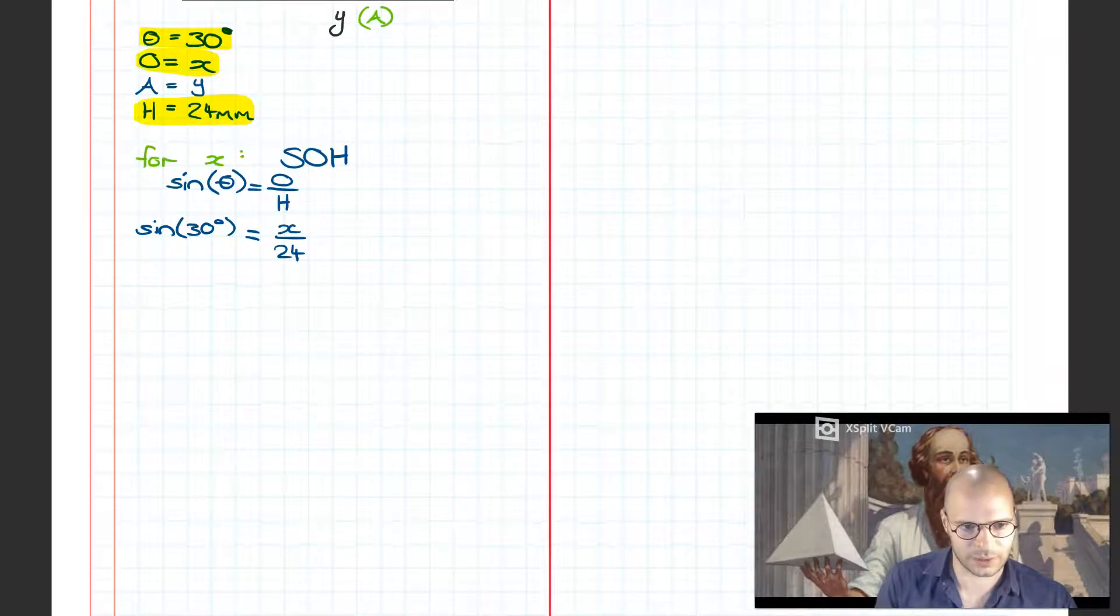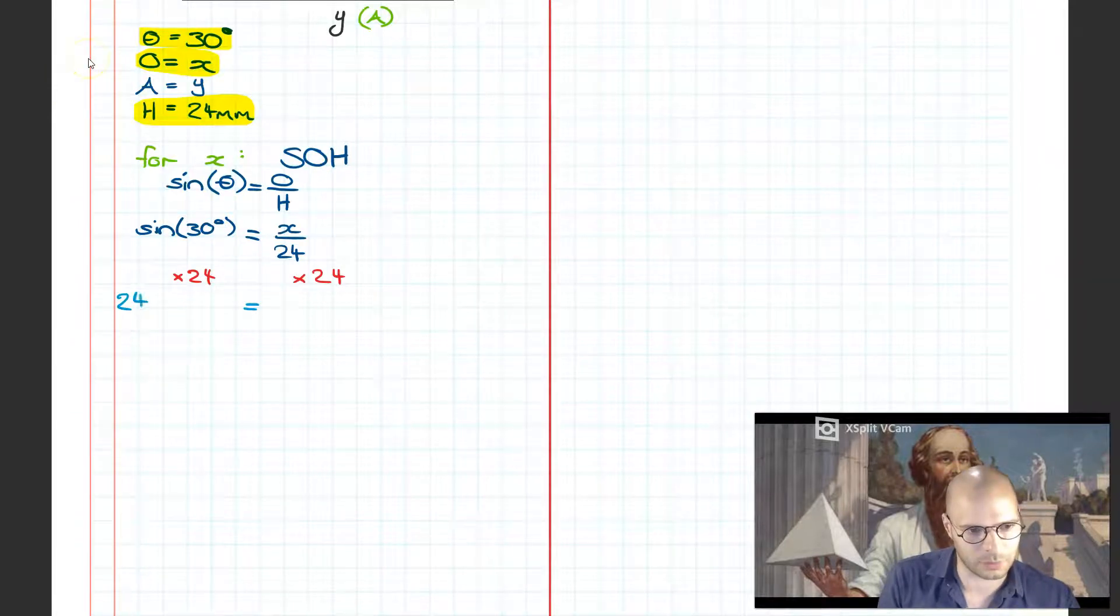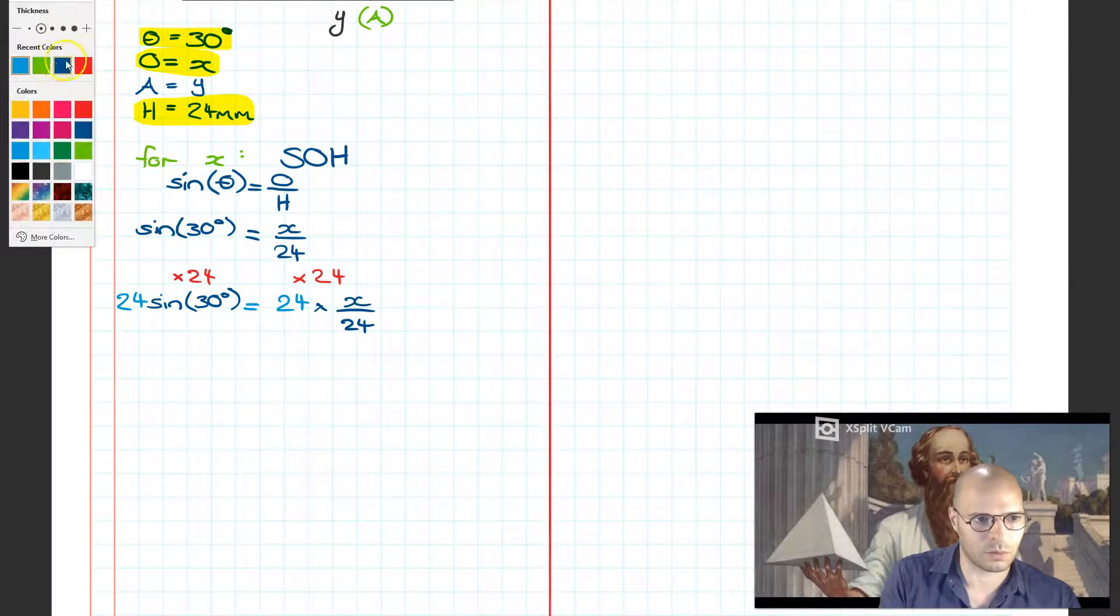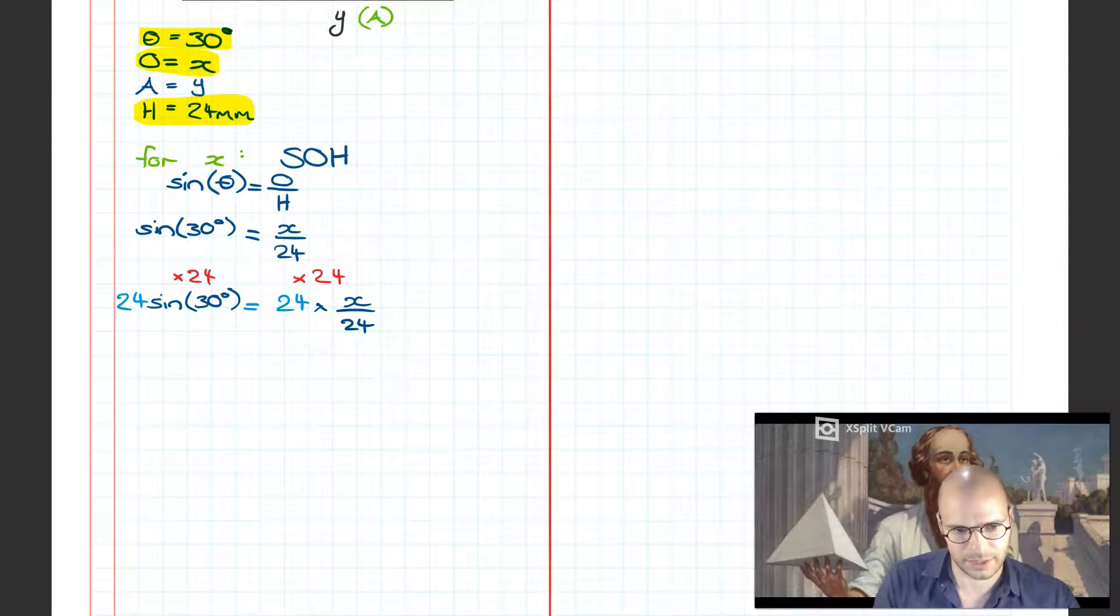Subbing in the values, I have sine 30 degrees is equal to X over 24. Now the way in which we solve for X is we need to rearrange this equation. Next to X we have a divide by 24, so to reverse divide I'm going to times. Multiplying this out, 24 appear on the left and we write this like algebra. The 24 and the sine just sit together and it means 24 times sine of 30 degrees. On the right hand side, I've got the 24 multiplied by X over 24.